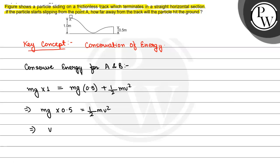From here, V will be equal to root G, which is equal to 3.1 meters per second.